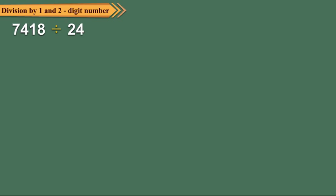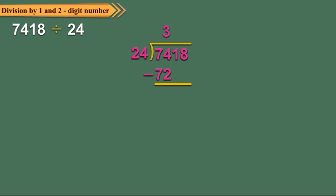Now let us see how we divide by a two-digit number. Consider the division 7,418 divided by 24. Write the dividend. Since the divisor is a two-digit number, we begin with the number formed by the first two leftmost digits of the dividend. This number is 74. Since 24 multiplied by 3 equals 72, and 72 is less than 74, write 3 as the first digit of the quotient. Write 72 below 74 and subtract to get 2. Bring down 1 to the right of 2 to get 21 as the new dividend.